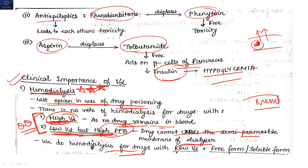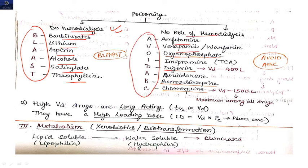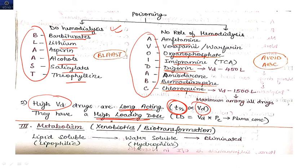Drugs where hemodialysis can be performed include: barbiturates, lithium, aspirin, alcohol, salicylates, and theophylline. These drugs have low volume of distribution and low plasma protein binding, so they remain in the bloodstream and can cross the dialyser membrane. Some drugs have high loading doses and will be discussed in separate videos.